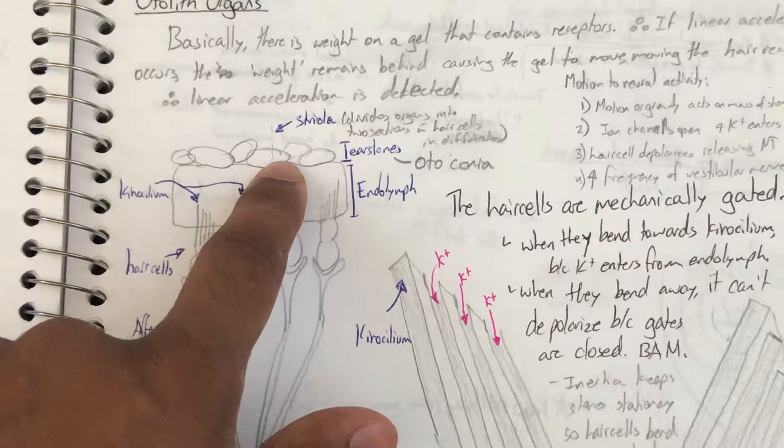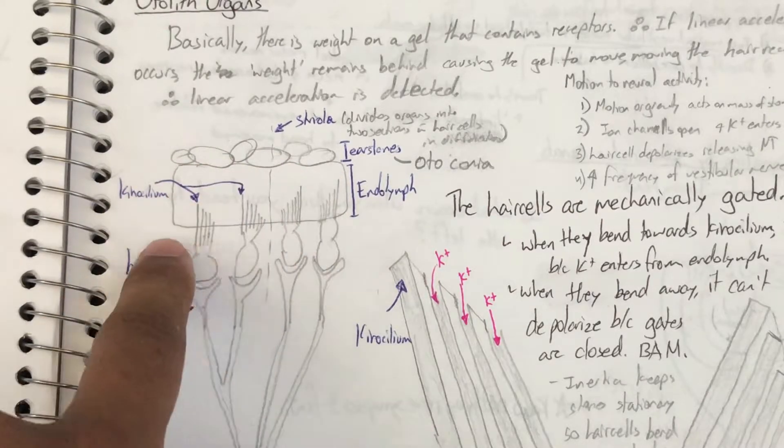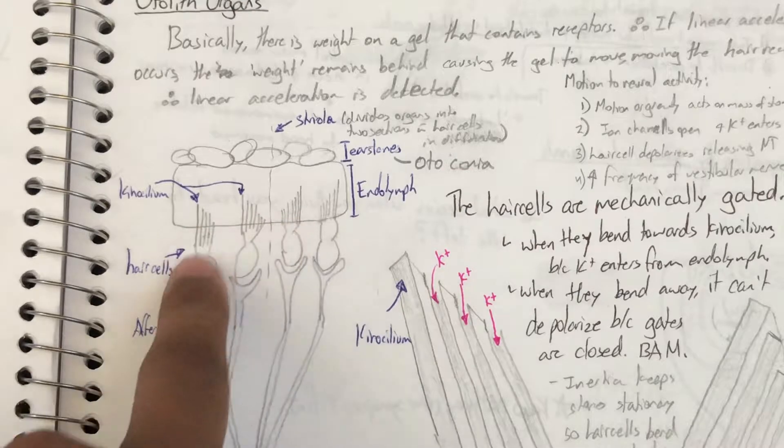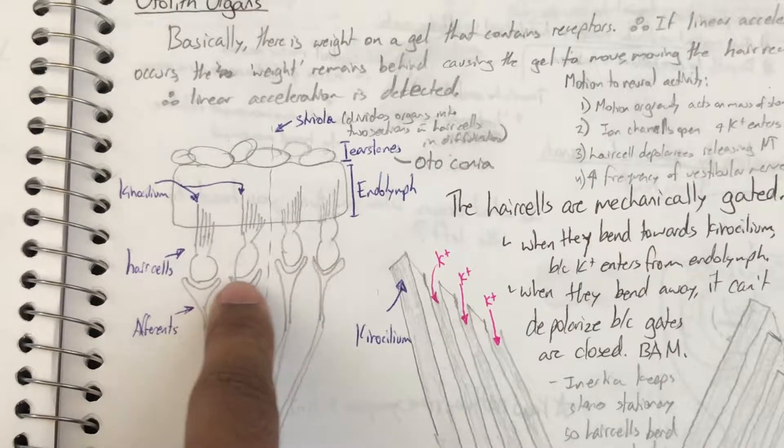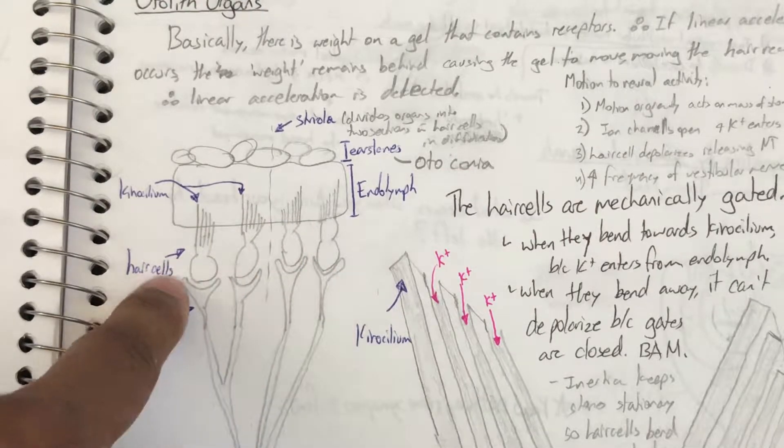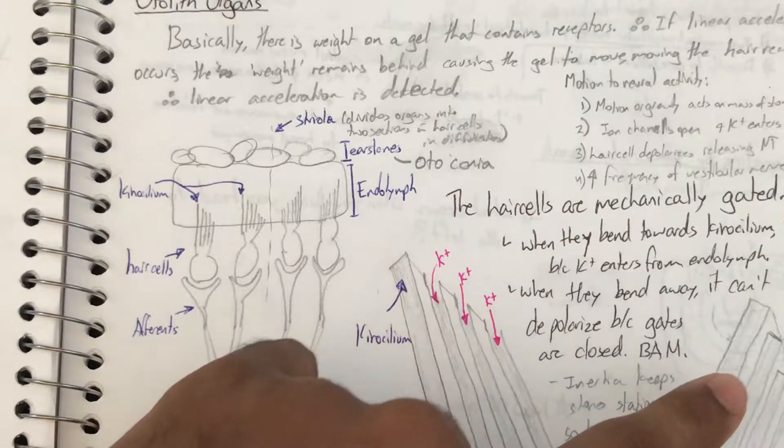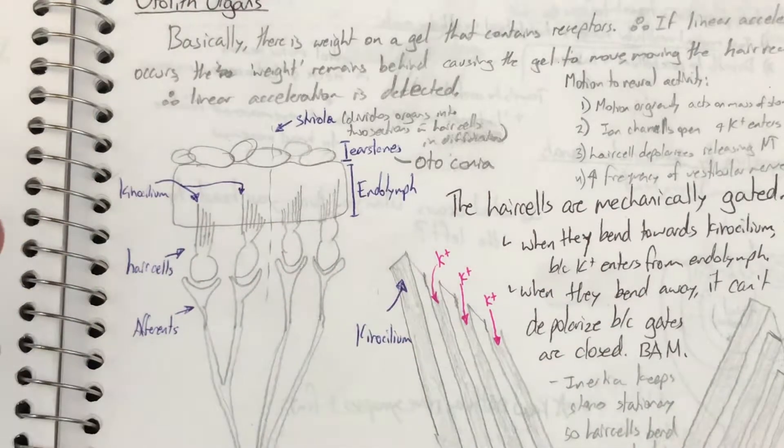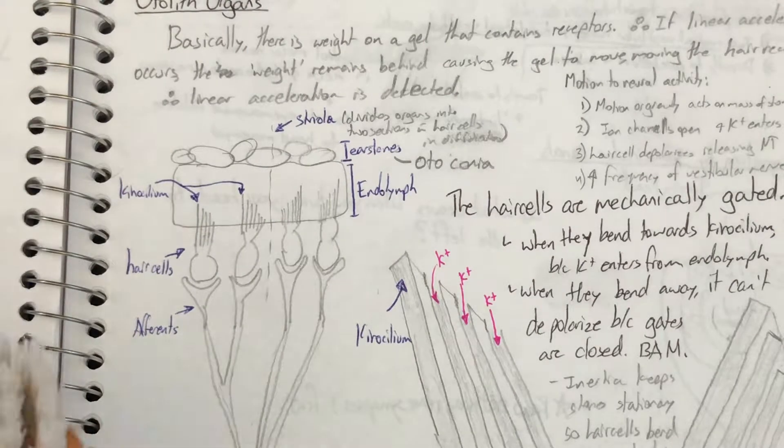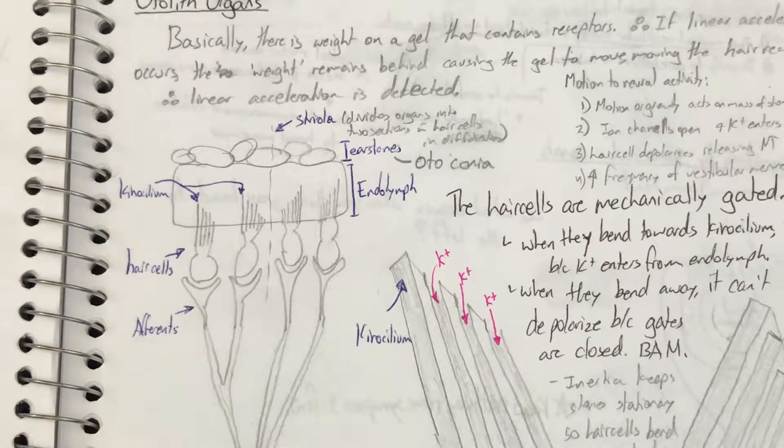Inside the gel medium are these receptors, and these receptors are like hair cells. When these hair cells move one way or the other, it gives an indication about movement, and that's how the body determines translation.